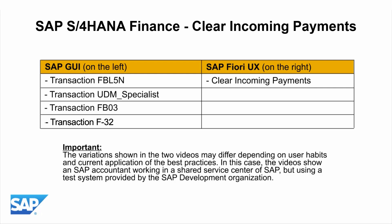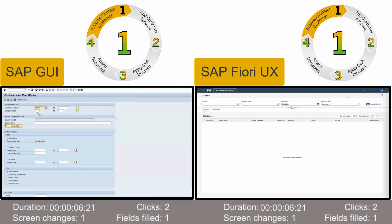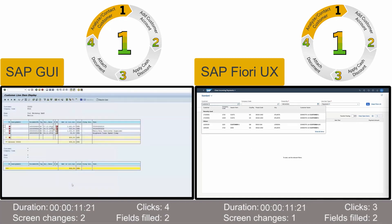Thanks to the new SAP Fiori user experience in SAP Finance, the accounts receivables accountant works more efficiently to manually clear an incoming payment. Let's have a look. Our accountant is searching for incoming payments that couldn't be cleared automatically, and for a selected payment, looks for the open items that match it.